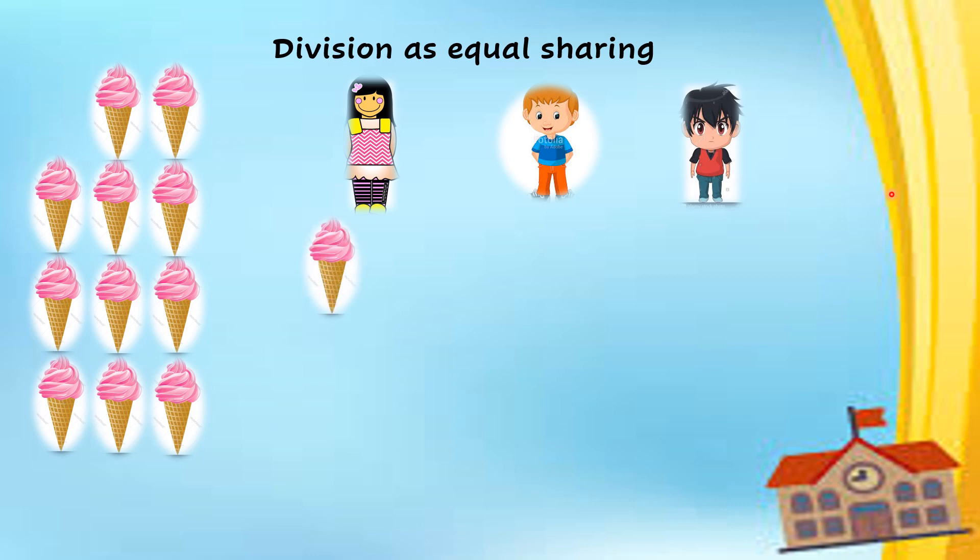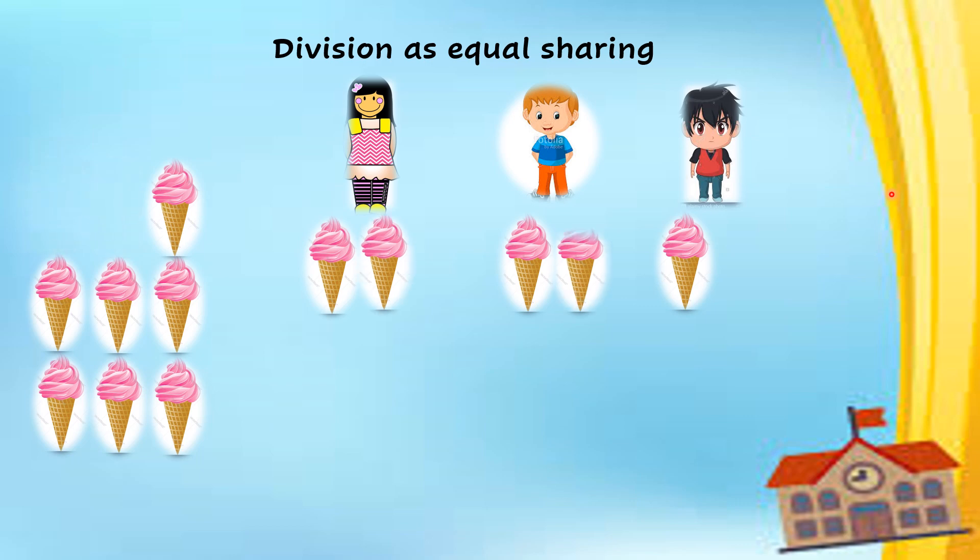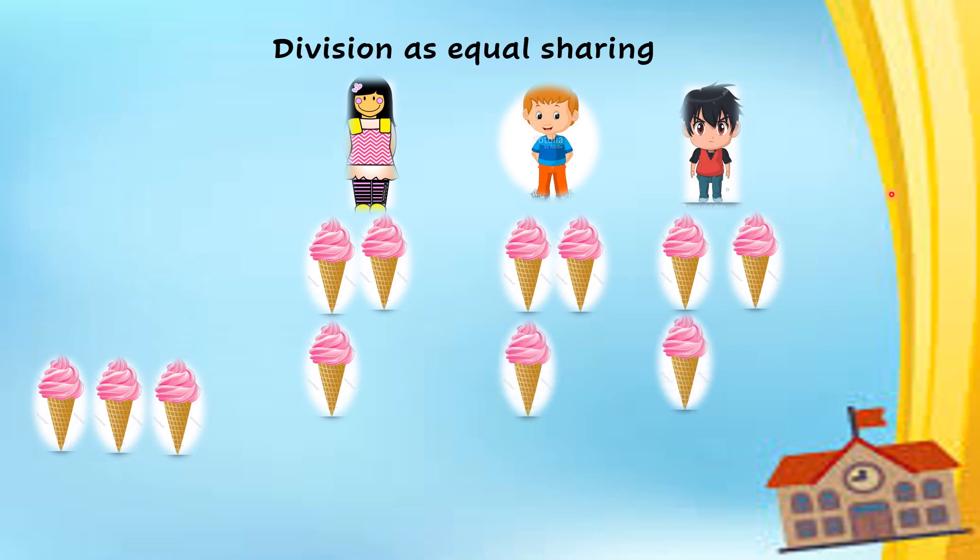The first ice cream goes to the first girl, the first child, second person, and the third person. Now each of them get one ice cream. Now, each of them get two ice cream. Now first person, second, third. Each of them get three ice cream. Now, I still have three ice cream left. Masih ada tiga lagi ice cream yang belum bahagi.